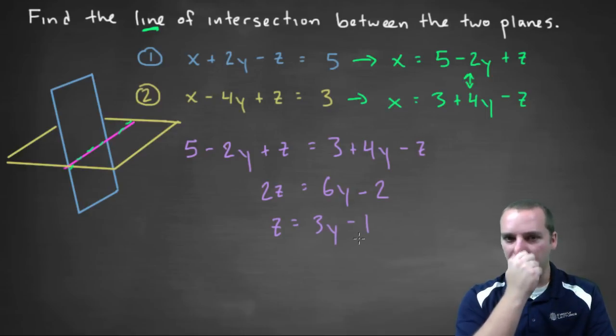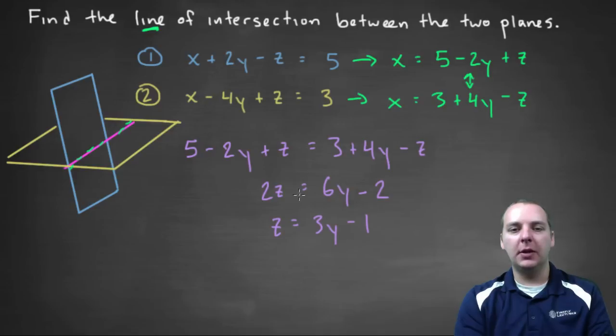And therefore z would be equal to three y minus one, if we divide everything through by two of course. So let me box this in here real quick.